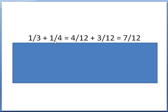Here we're trying to add one-third and one-quarter. They do not have a common denominator, so we have to get a common denominator. The least common denominator is 12 — you can find it by multiplying 3 times 4. Multiply the numerator and denominator of one-third by 4 to get four-twelfths, and one-fourth by 3 to get three-twelfths. Adding four plus three gives seven-twelfths.